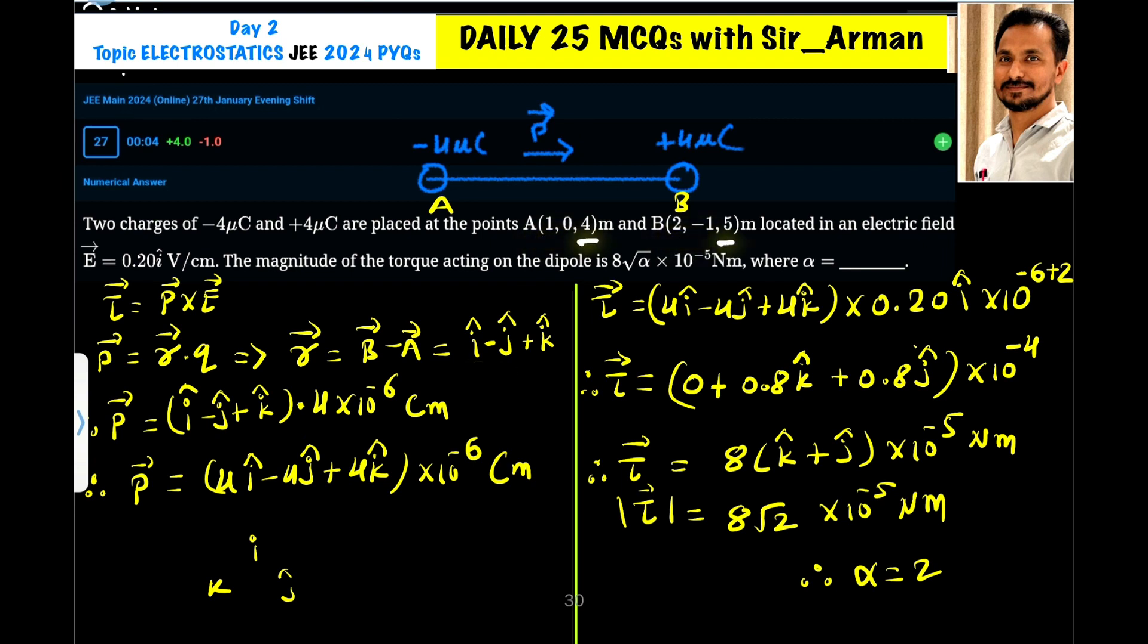And here it is 5 minus 4, so it is 1 K cap, because this is Z2 minus Z1, so it is 1 here. So it is I minus J plus K, I am not writing the 1.